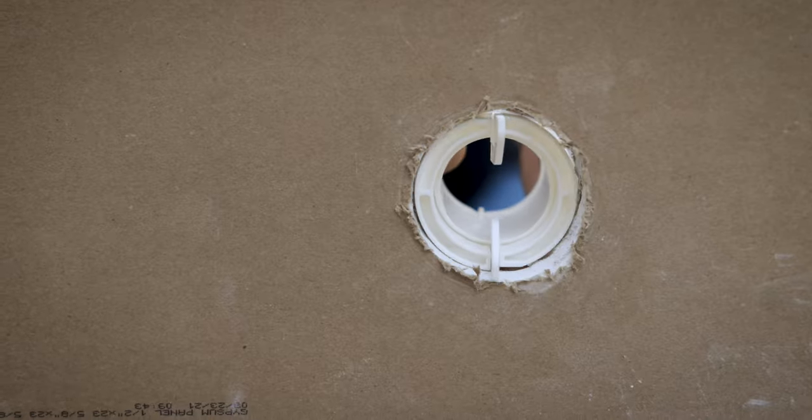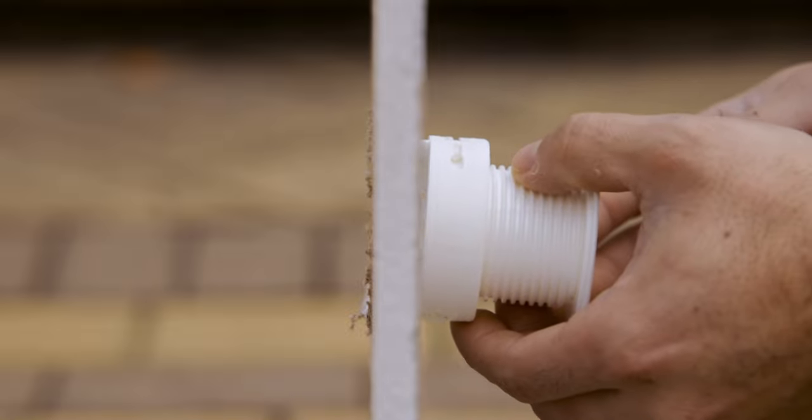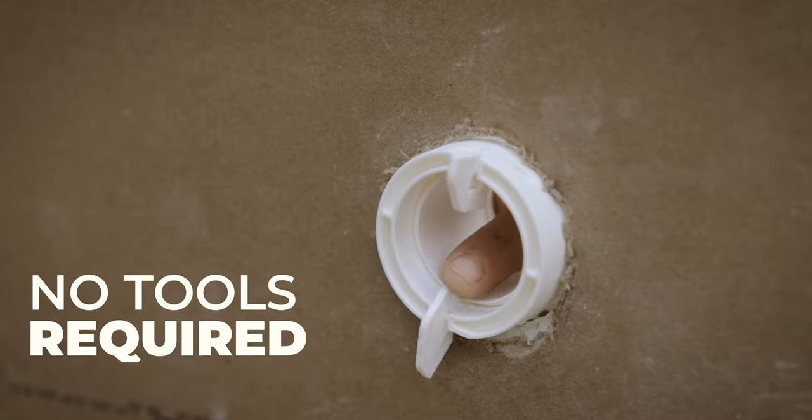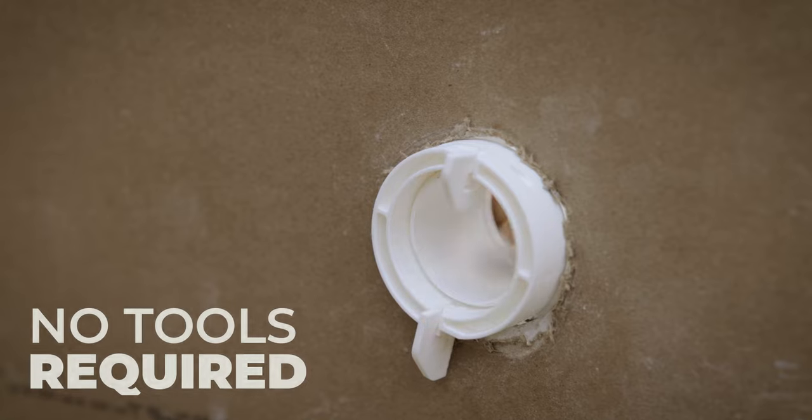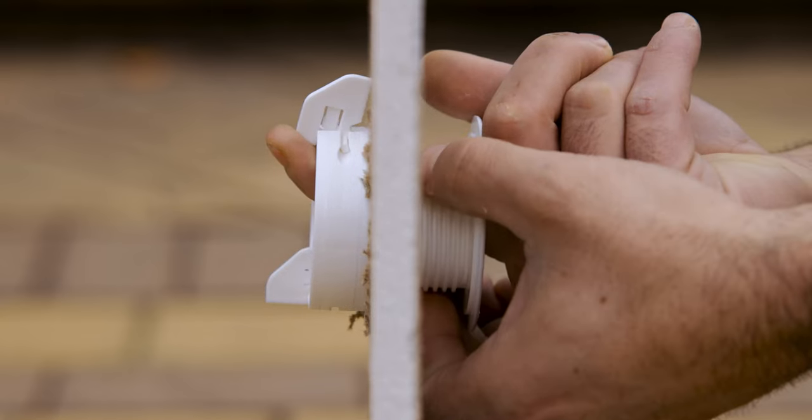Insert the grommet into the intended opening, press and hold it against the surface. Insert your finger into the tube and push the wings outward until you feel them click into activated mode.